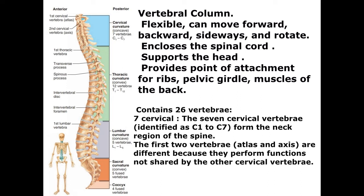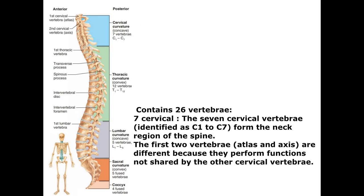Vertebral column. It is flexible — it can move forward, backward, sideways, and rotate. It encloses the spinal cord, supports the head, and provides a point of attachment for ribs, the pelvic girdle, and muscles of the back. It contains 26 vertebrae: 7 cervical vertebrae (C1 to C7) form the neck region of the spine. The first two vertebrae, the atlas and axis, are different because they perform functions not shared by the other cervical vertebrae.